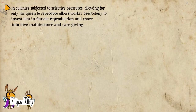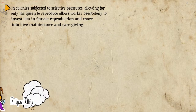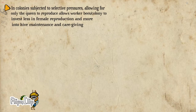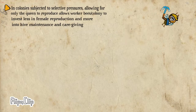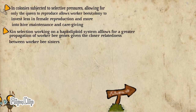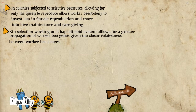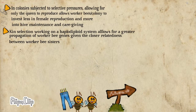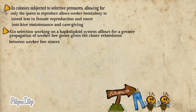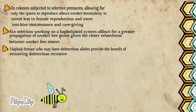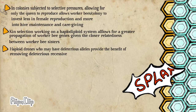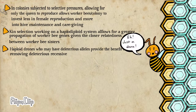In honeybee colonies where limited resources are a selective pressure, the ability of worker bees to forgo reproduction and allow the queen to be the sole reproductive individual enables the worker bees and greater colony to conserve resources. Instead, they invest their energy to provide beehive maintenance and caregiving services. Kin selection operating on a haplodiploid system also allows for a greater propagation of worker bee genes given the close relatedness between worker bees and their juvenile sisters. The short-lived haploid drones, who may carry deleterious alleles, also provide the benefit of removing any unfavorable alleles that could be propagated through sexual means.